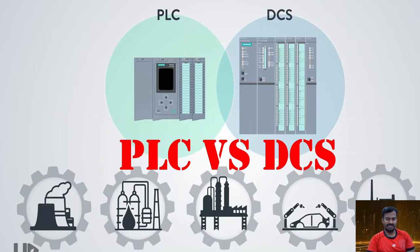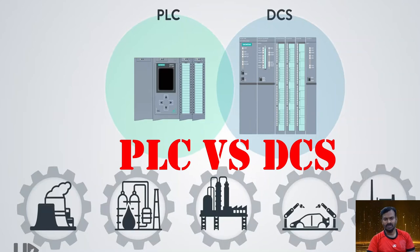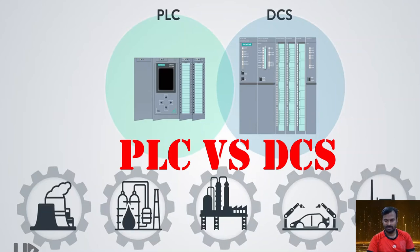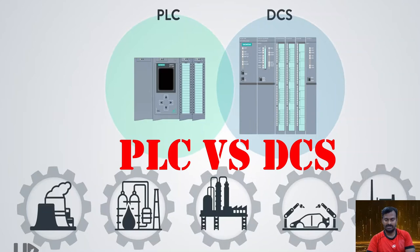Today I'm going to discuss and explain the difference and similarity between the Programmable Logic Controller and Distributed Control System, which are widely used in industries for automating processes and making systems more efficient and flexible. In our earlier videos we discussed PLC and DCS architecture and applications, so in this video we are going to differentiate both in terms of capabilities, advantages, disadvantages, and so on.